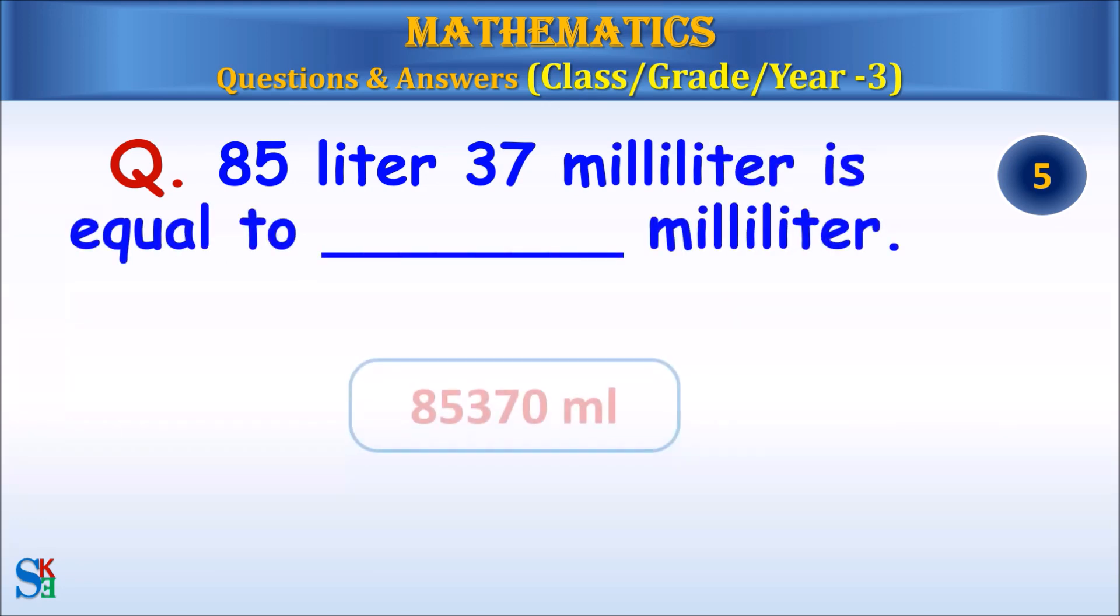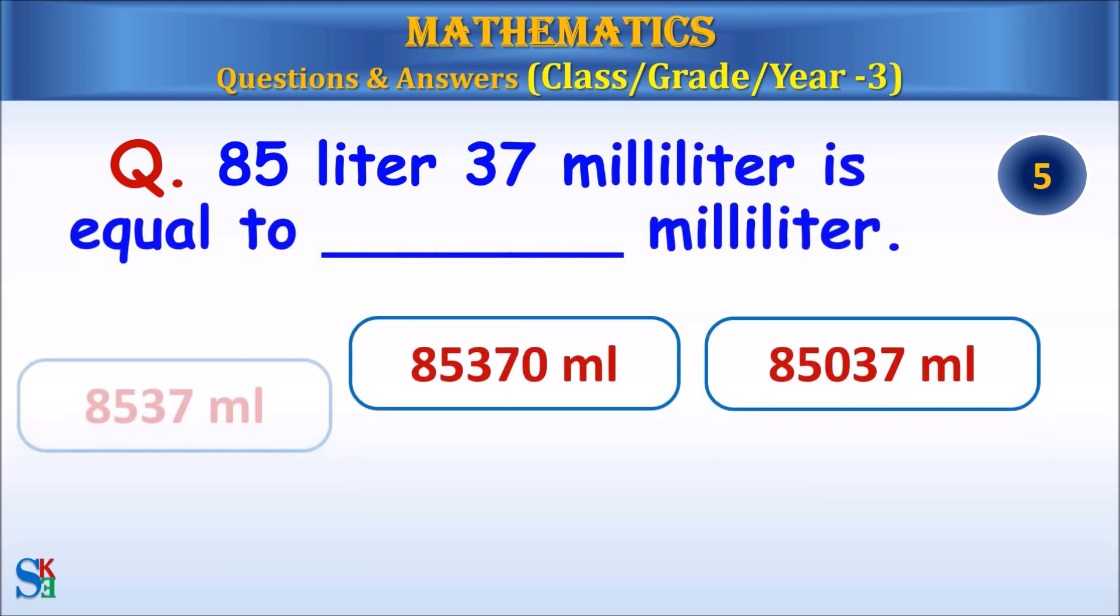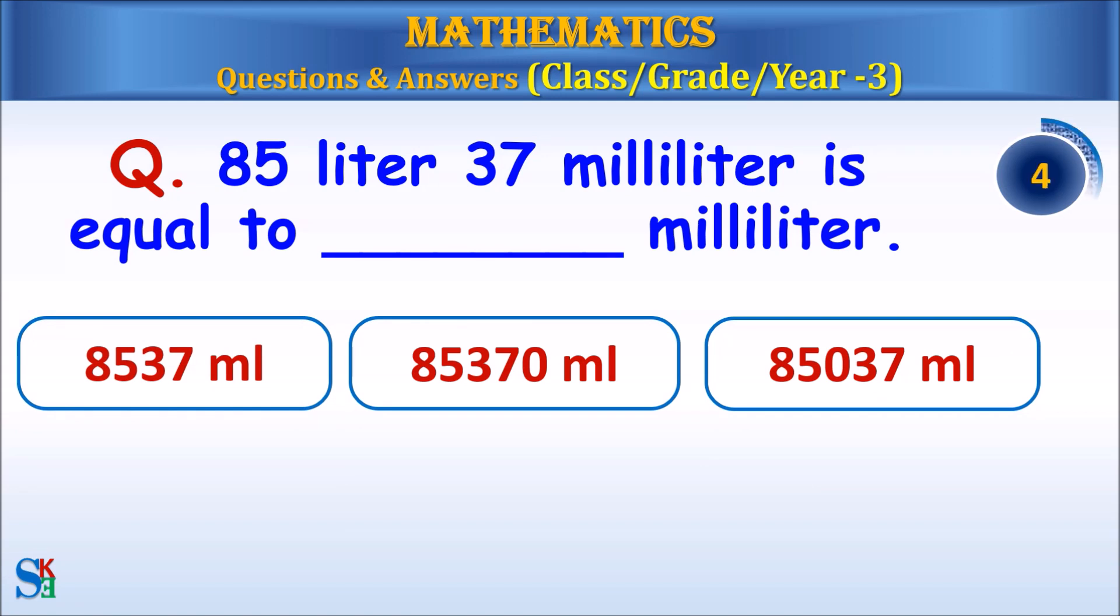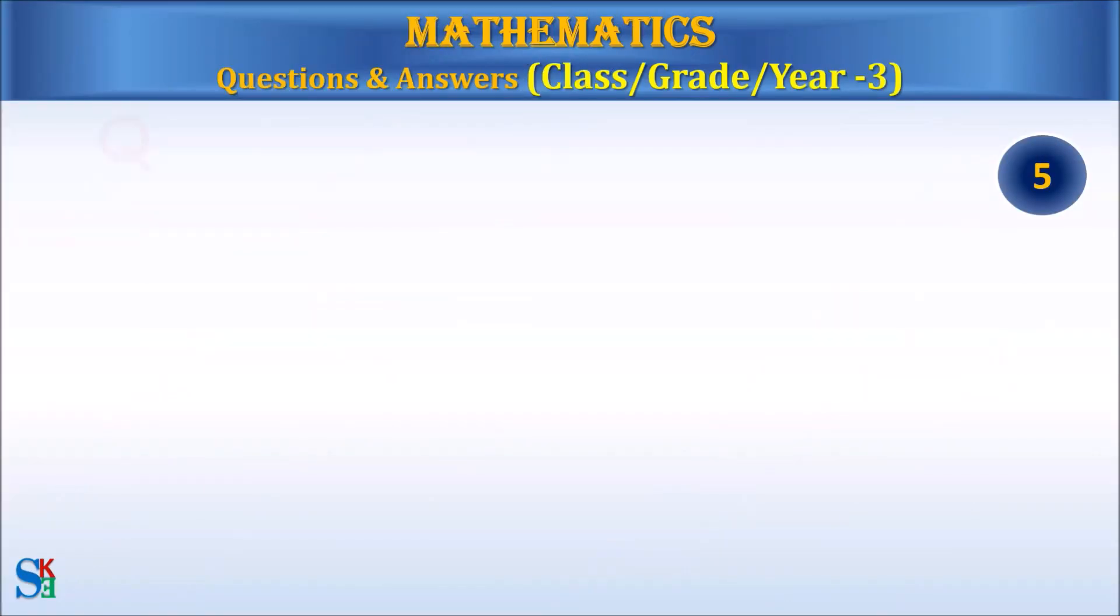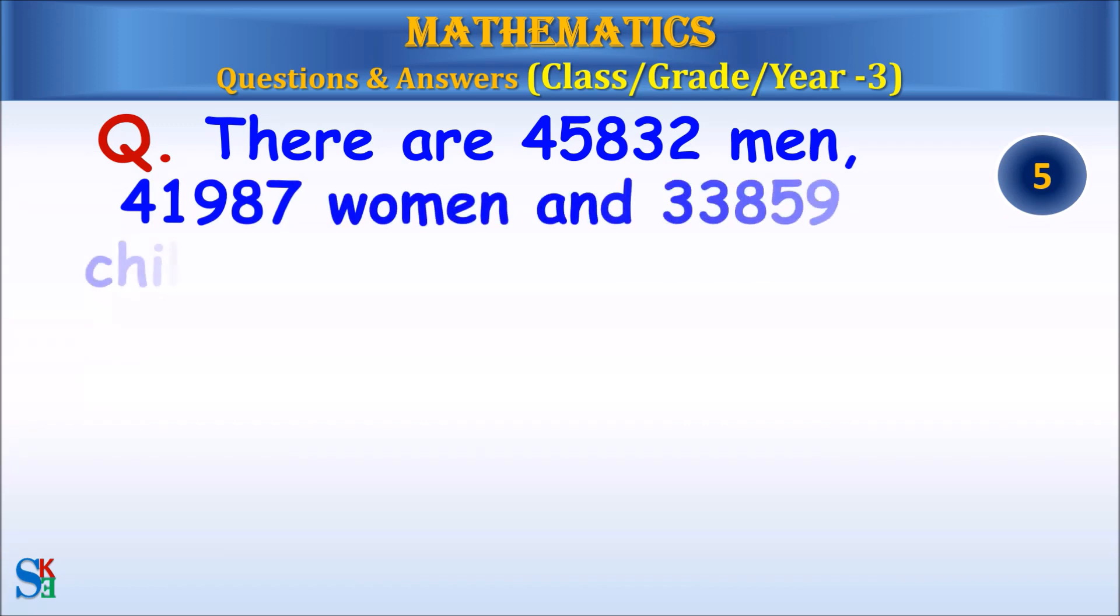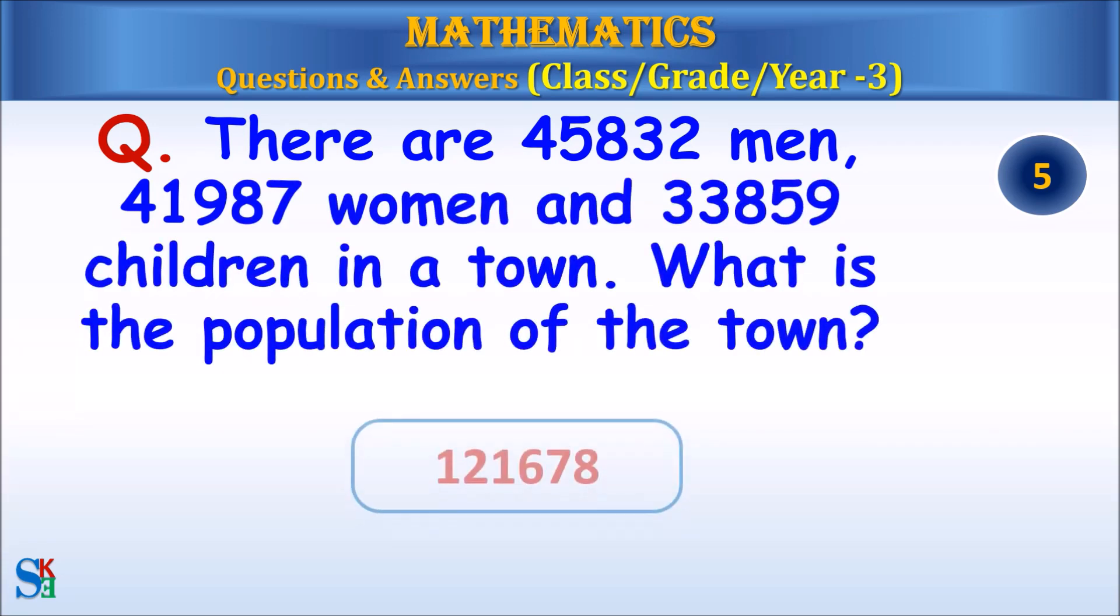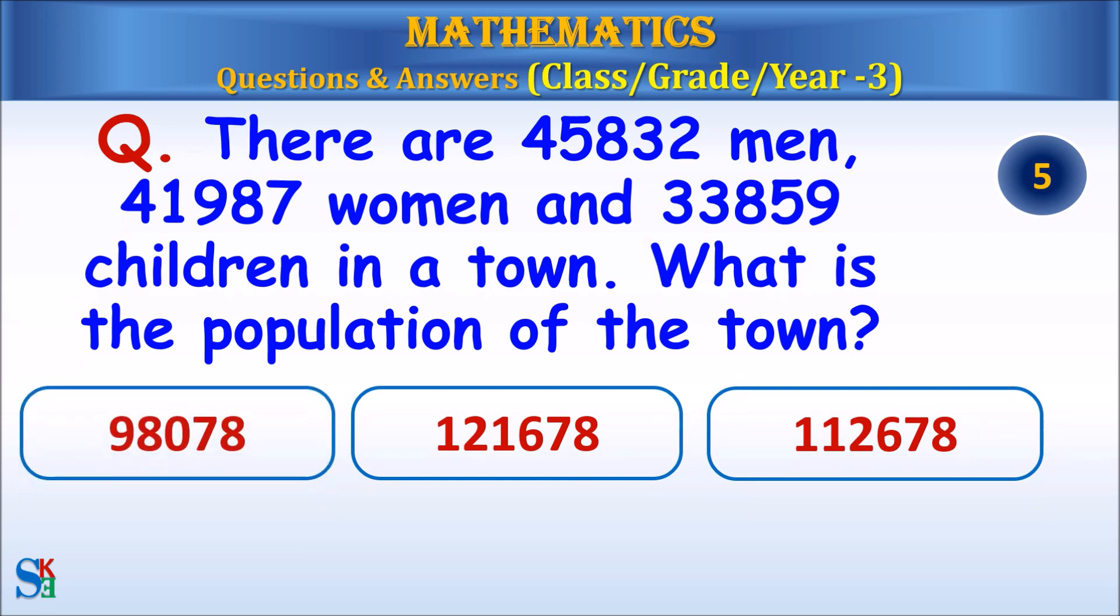85 liter and 37 milliliter is equal to how many milliliter? Answer: 85,037 milliliter.